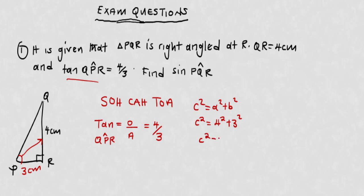c squared equals 4 squared plus 3 squared, which is 16 plus 9 equals 25. So c equals the square root of 25, which is 5. The hypotenuse is 5 centimeters.